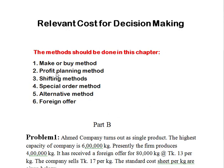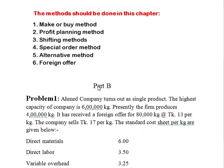I am going to do some methods — the methods that should be done in this chapter. Act number 10 includes: the make-or-buy method, minimum profit planning method, shifting method, special order method, and alternative and foreign offer method.